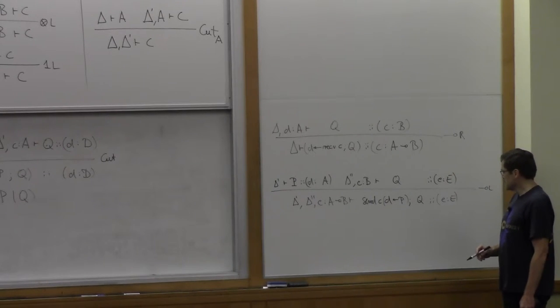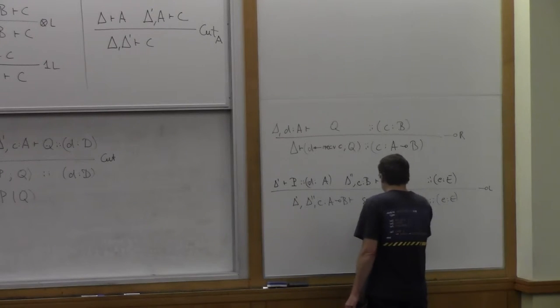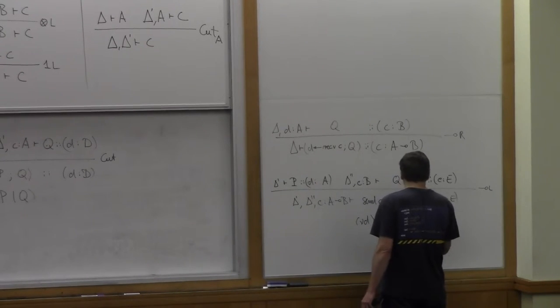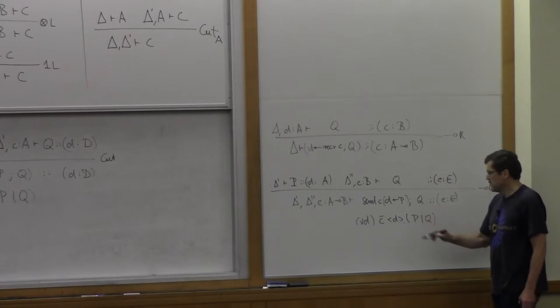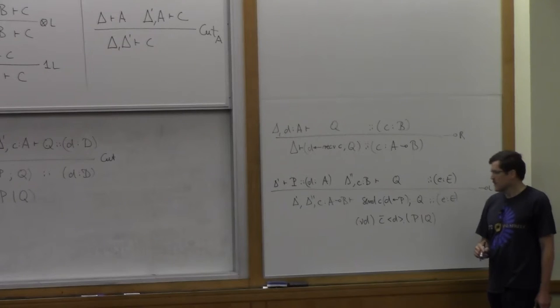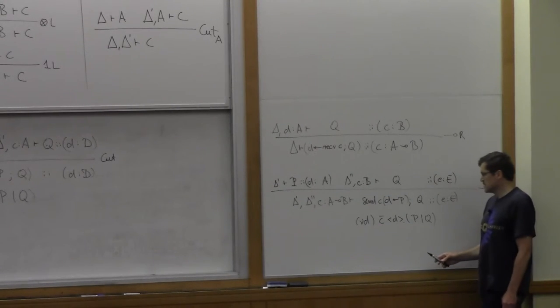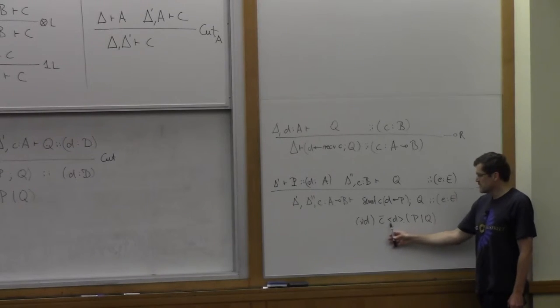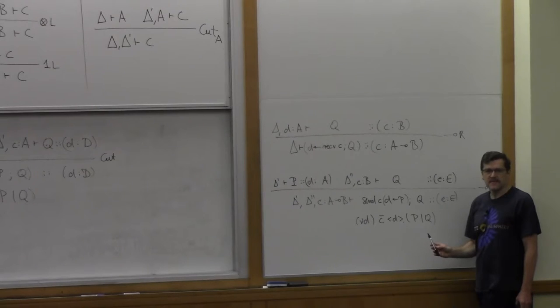So we can't do that. We can't just send D. We actually have to spawn P to offer, to provide the service. So the way we write this is like that. So we spawn the process P which will provide service A along D. We pass that channel to C. And then we continue and now we can use C at type B.